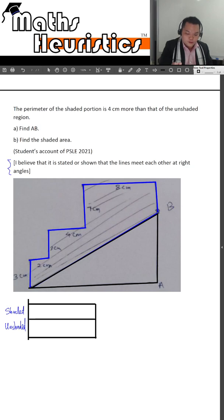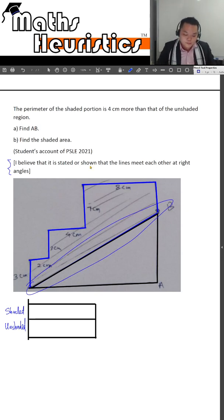For the shaded portion and the unshaded portion, what do they have in common? The first object you can see has to be this slanted length. They have this in common.